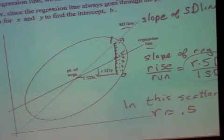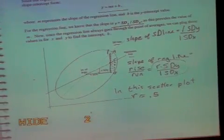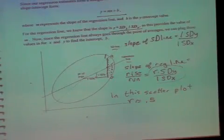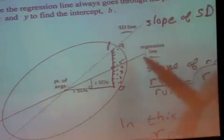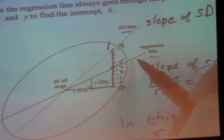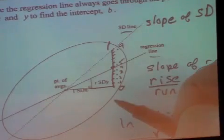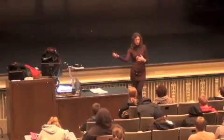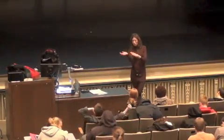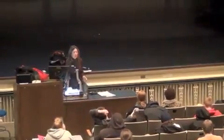Do you always assume the graph is to scale? It doesn't matter exactly — the relationship between r, the regression line, and the SD line will still be to scale even if the rest of the graph isn't. So comparing the steepness of those two lines is still valid. Good question.